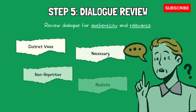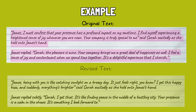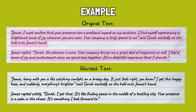Step 5: Dialogue. Review dialogue for authenticity and relevance. Ensure that each character's voice is distinct and eliminate unnecessary or repetitive conversations. For example, in an early draft of a contemporary romance novel, two characters, Sarah and James, engage in a lengthy conversation that feels overly formal and lacks emotional depth. The dialogue between them is repetitive. During the dialogue review, the author identifies the need to infuse authenticity and emotional resonance into Sarah and James' conversation, revising the dialogue to reflect the characters' personalities and the scene's context.